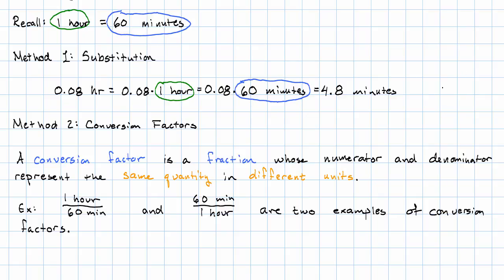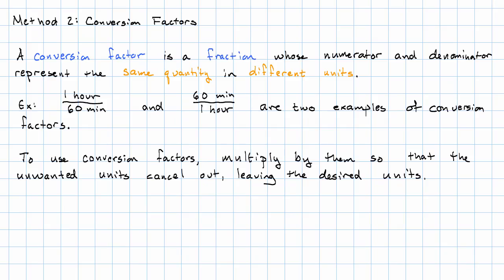How do we use conversion factors to do unit conversions? We'll multiply by conversion factors so that the unwanted units cancel out, leaving the desired units. So let's see that in our example. We started off with 0.08 hours. And of course, that goes in the numerator. 0.08 hours is the same as 0.08 hours over one.